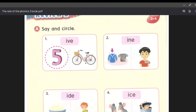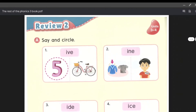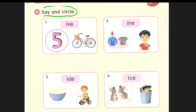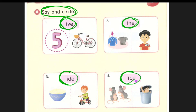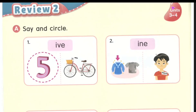So now Teacher L is going to explain your homework. Please listen carefully. Your homework is going to be page 22 and 23. Say and circle. So what you have to do is very easy — you just have to try and say the phonics. The phonics is I-V-E.